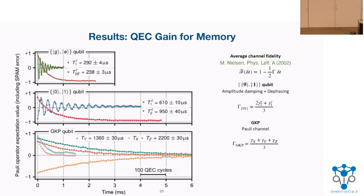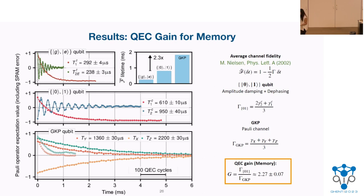Fitting exponentials to all the decay curves and extracting the decay rates, we compute the QEC gain to find that active error correction using GKP has improved the lifetime of my Fock-zero-one encoding by a factor of 2.3. You can see this is already better than the transmon, which is much lower than the Fock-zero-one encoding as well.